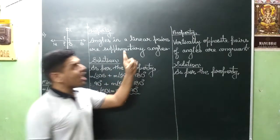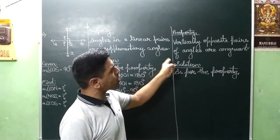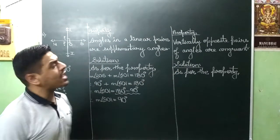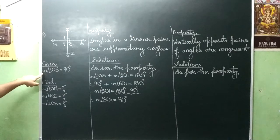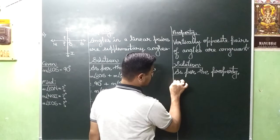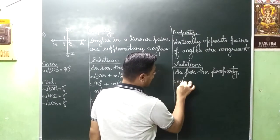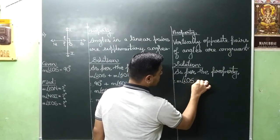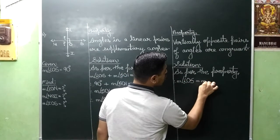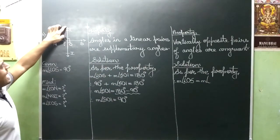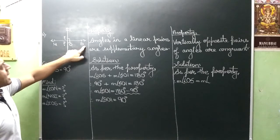So ab ne property likhi. Vertically opposite pairs of angles are congruent. Then leave a line solution as per the property. Sabse pehla angle hai NOS. So we will start from it. Measure angle NOS is equal to measure angle NOS. Correct?